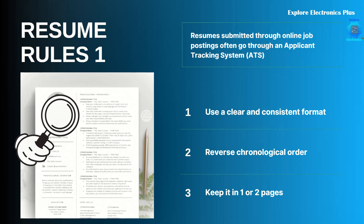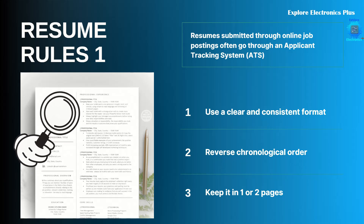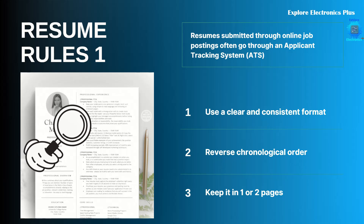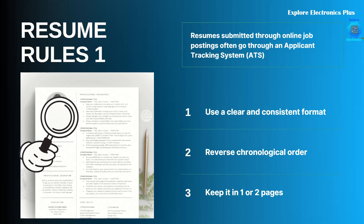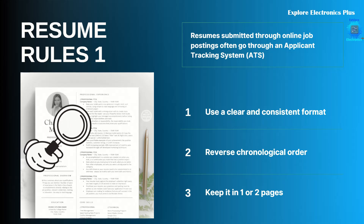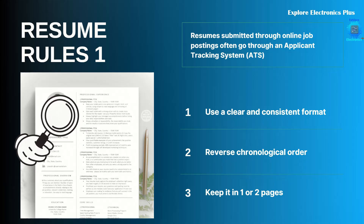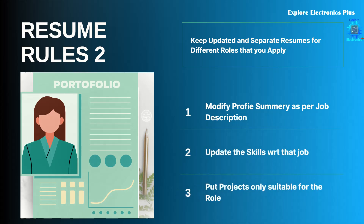That's why you need to follow some rules while preparing your resume. The very first thing is to use a clear and consistent format. You need to put all details — educational background and experience — in reverse chronological order, meaning the most recent experience or degree goes first. Keep the resume to one page or maximum two pages, keep it updated, and maintain separate resumes for different roles you apply for.